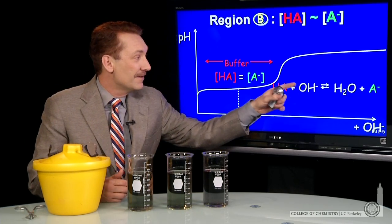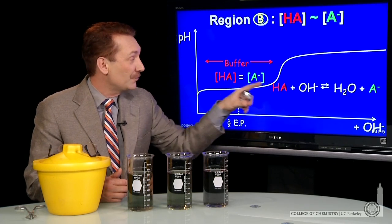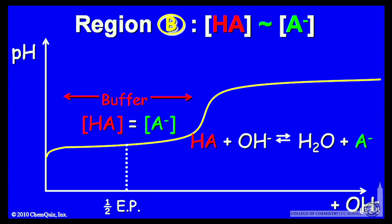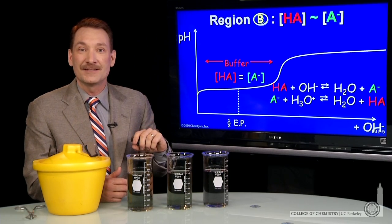For instance, if I add another drop of strong base, that will react with some of the weak acid that's there. If I add another drop of acid, reversing along the titration curve, that will be consumed by some of the weak base that's there.